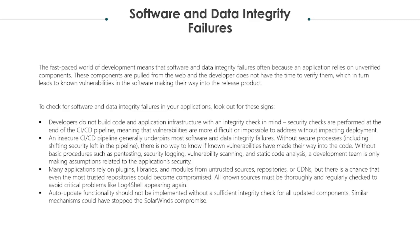Modern software delivery pipelines include auto-update functionality that streamlines life cycles by downloading updates and applying them without inheriting permissions. Threat actors can exploit such functionalities by performing a man-in-the-middle attack to inject malicious code into the pipeline during the update process. To check for software and data integrity failures in your applications, we should look out for these signs: developers do not build code and application infrastructure with an integrity check in mind. Security checks are performed at the end of the CI/CD pipeline, meaning that vulnerabilities are more difficult or impossible to address without impacting deployment. An increased CI/CD pipeline generally underpins more software and data integrity failures.